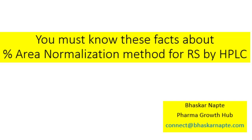HPLC is widely used for quantification of impurities or related substances present in an analytical sample. The obvious question when we talk about quantification is whether we need to prepare a standard. If no standard is needed, you quantify impurities based only on the areas or responses of the impurities and the principal compound. This technique is called percent area normalization.